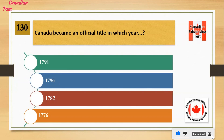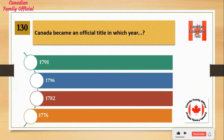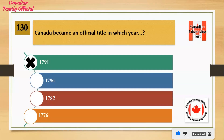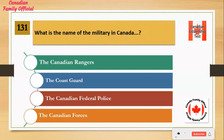Canada became an official title in which year? Number 1: 1791. Number 2: 1796. Number 3: 1782. Number 4: 1776. And the answer is 1791.